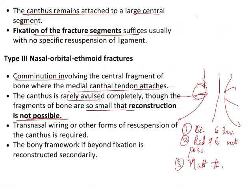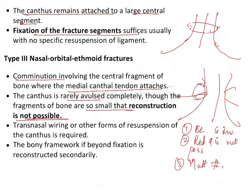Transnasal wiring involves applying a wire from the medial canthal ligament, taking it to the other side, and attaching the medial canthal ligament on the other side — this is transnasal wiring, or other forms of resuspension of the canthus are required. The bony framework, if beyond fixation, is reconstructed secondarily, probably using grafts.